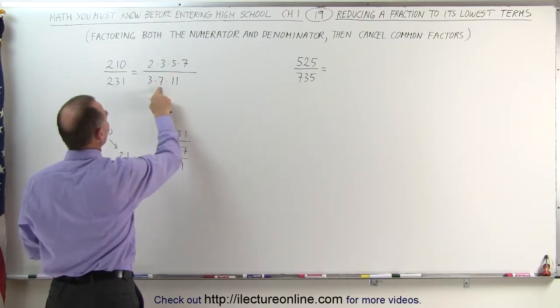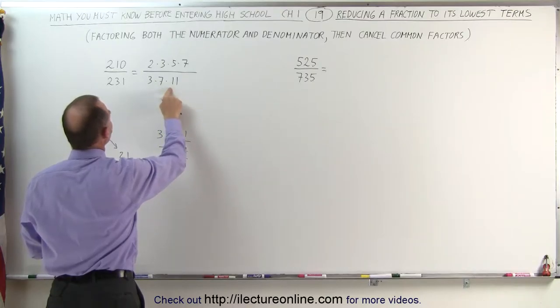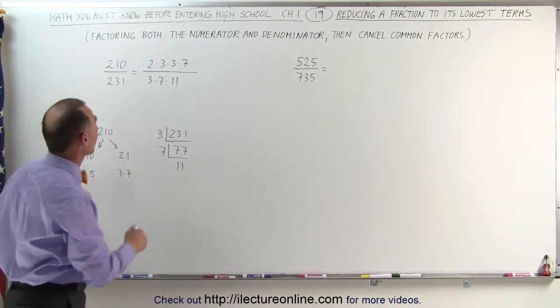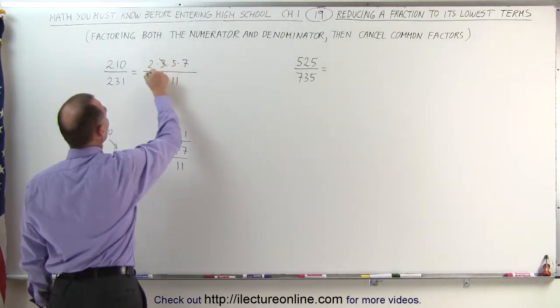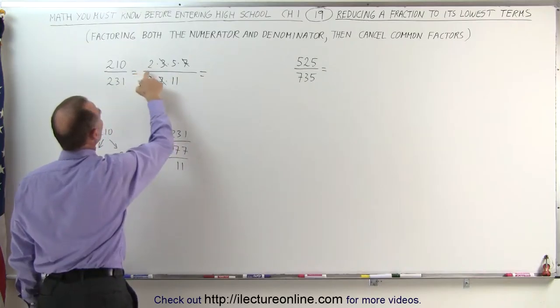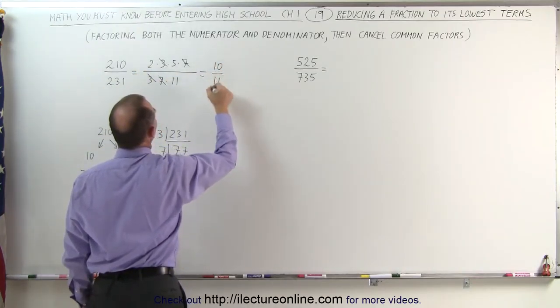A quick check to see if this is correct. That's 21, that's 210, yes, that is correct. Okay, now we look for common factors. We see the number 3 is common, the number 7 is common, which means that this can be reduced to 2 times 5, which is 10 divided by 11.